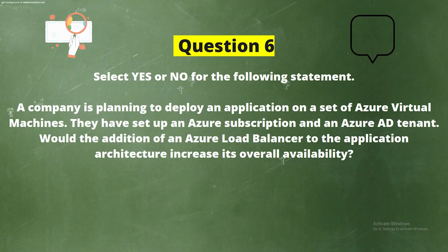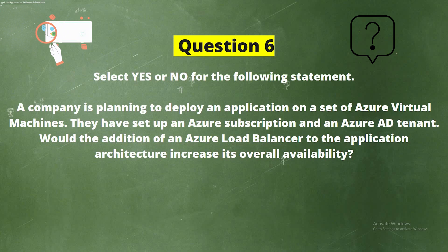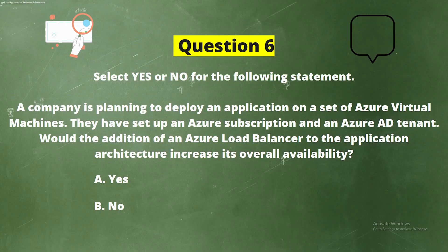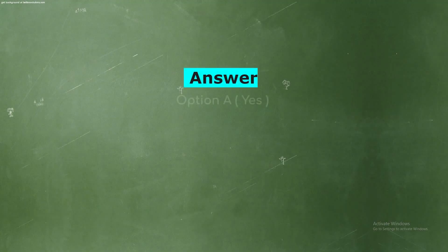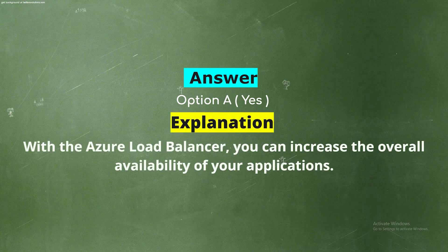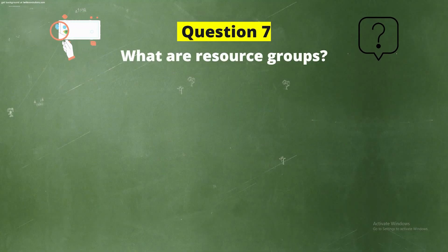Question 6: A company is planning to deploy an application on a set of Azure virtual machines. They have set up an Azure subscription and an Azure AD tenant. Would the addition of an Azure Load Balancer to the application architecture increase its overall availability? Options: Option A - Yes, Option B - No. The correct answer is Option A - Yes. Explanation: With the Azure Load Balancer you can increase the overall availability of your applications.